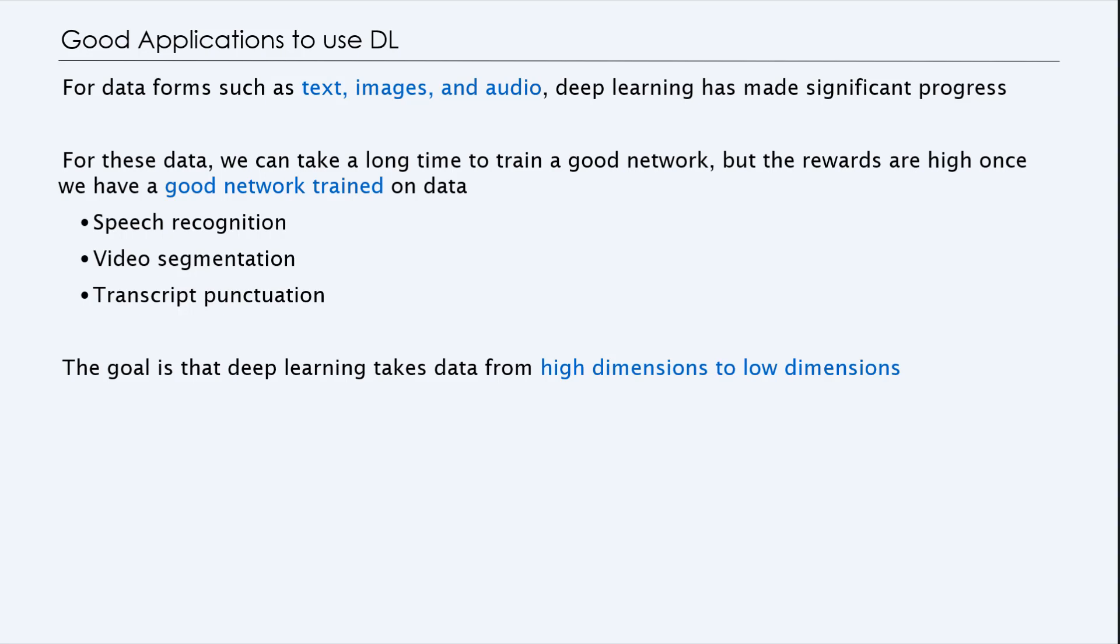So good applications to use deep learning include forms of data such as text, images and audio. And deep learning has made significant progress in these areas. For this data, we can take a long time to train a good network. But the rewards can be high once we have a good network trained on data. For example, speech recognition or video segmentation or transcript punctuation. These models can work quite well.